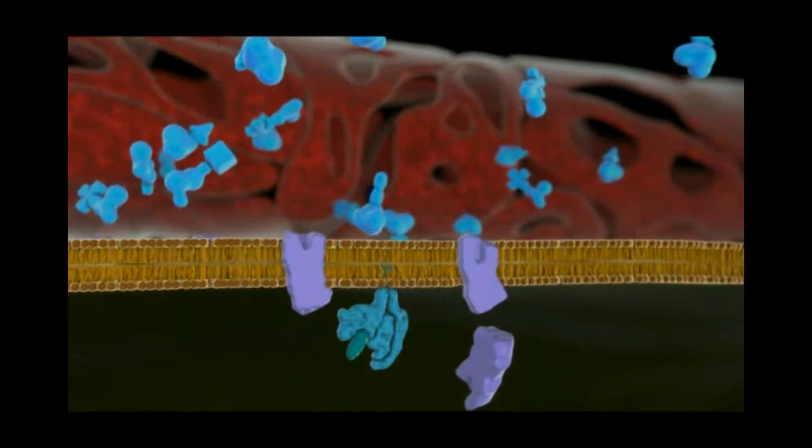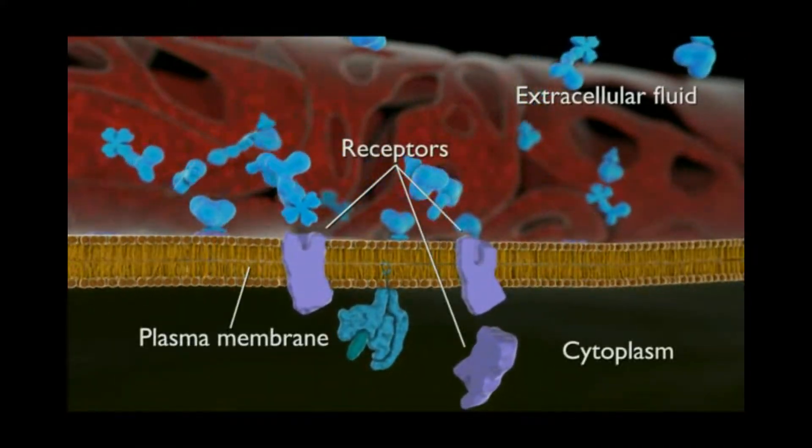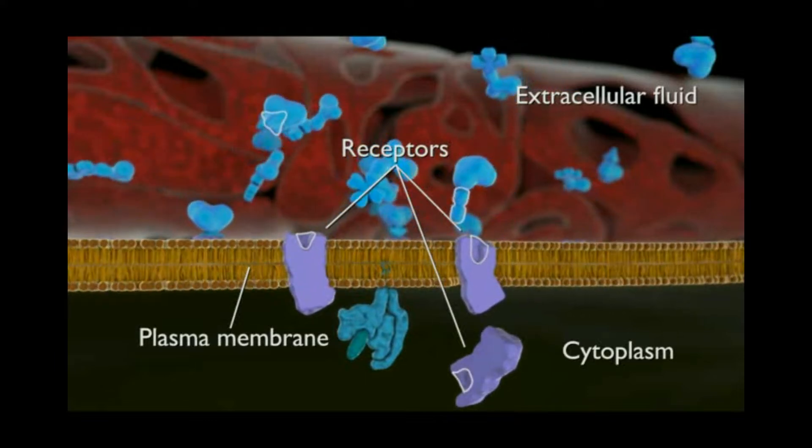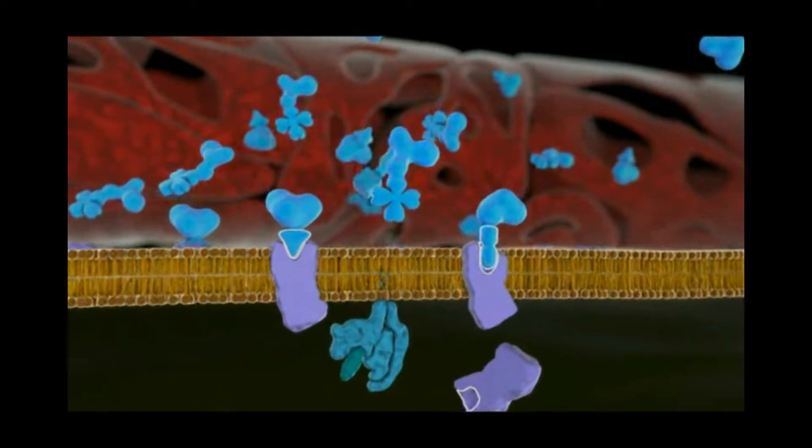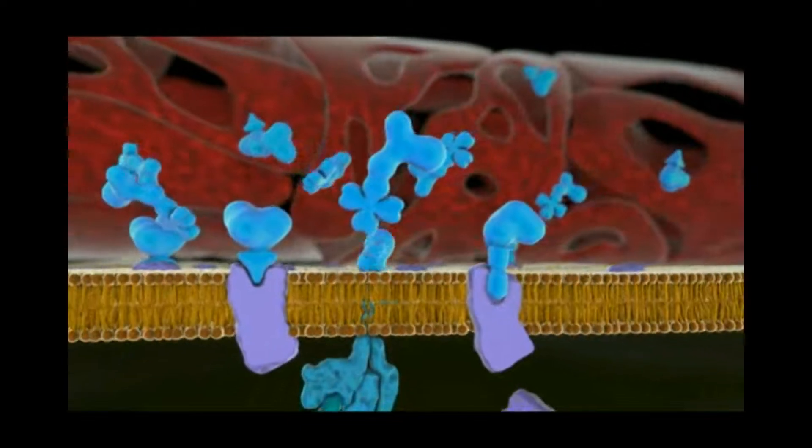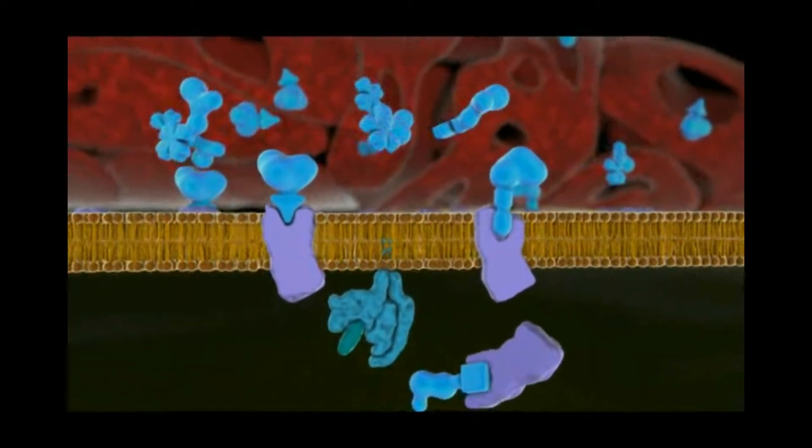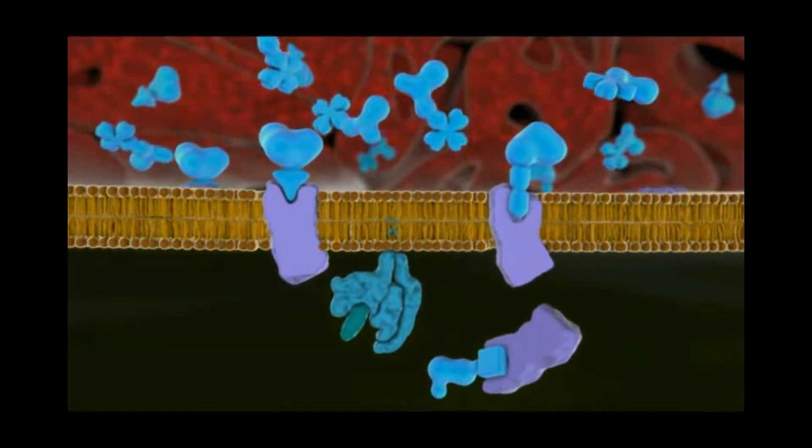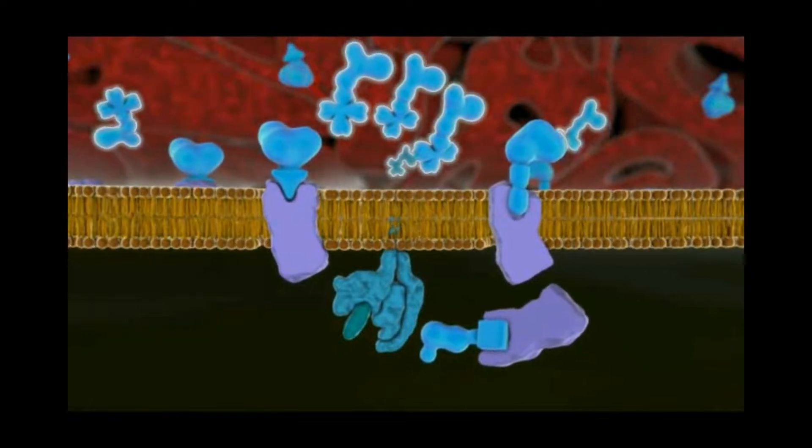Target cells for a specific hormone have receptors that bind the unique three-dimensional shape of that hormone. Cells that lack a specific hormone receptor are unresponsive to that hormone, even if a high concentration of the hormone is present around the cells.